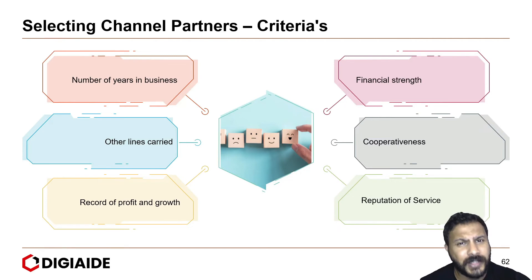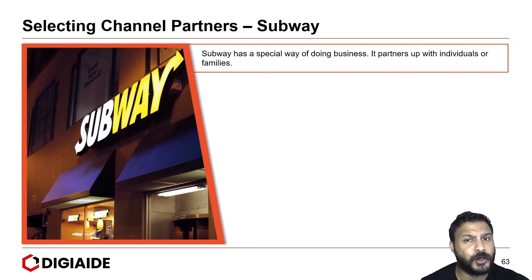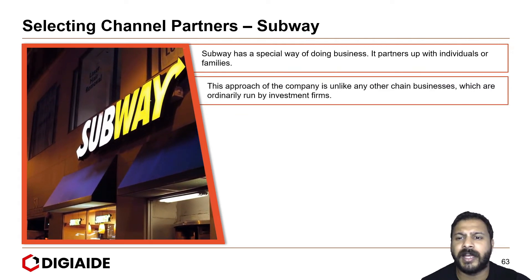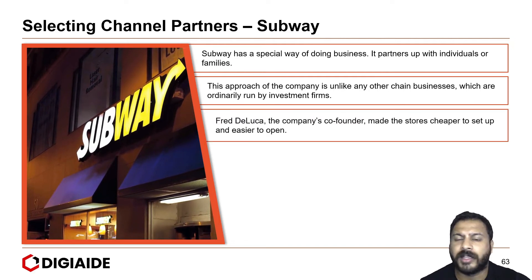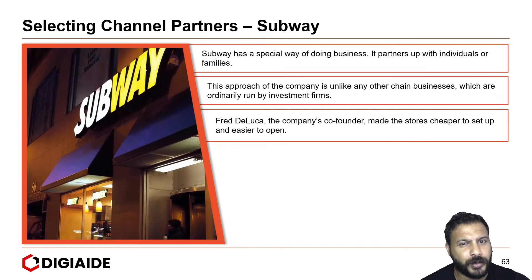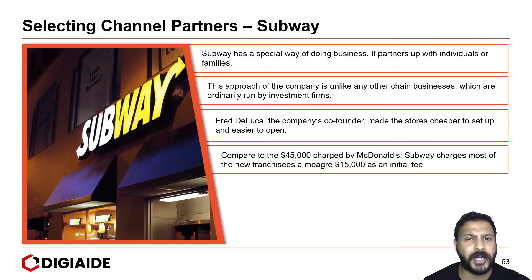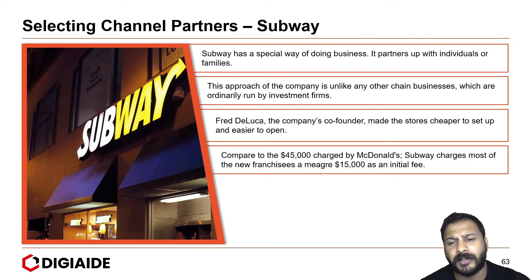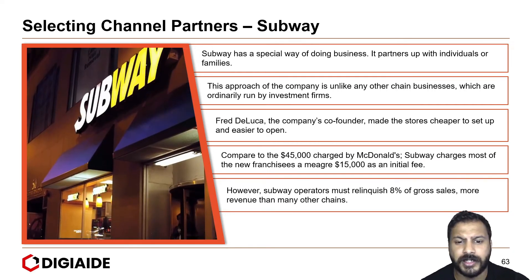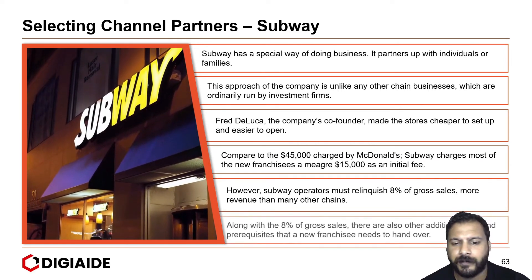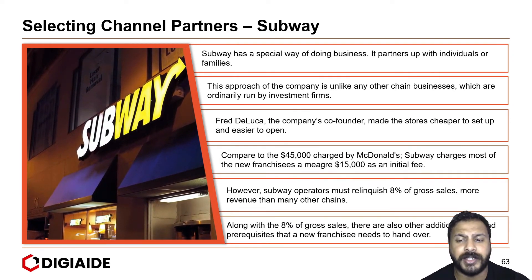Let's look at the selection criteria of Subway. Subway has a special way of doing business — it partners up with individuals or families. This approach is unlike other chain businesses, which are already run by investment firms. Fred DeLuca, the company's co-founder, made the stores cheaper to set up and easier to open. Compared to the $45,000 charge of McDonald's, Subway charges most new franchises a meager $15,000 as an initial fee. However, Subway operators must relinquish 8% of gross sales, more than other chains, along with additional fees and prerequisites that a new franchisee needs to hand over.